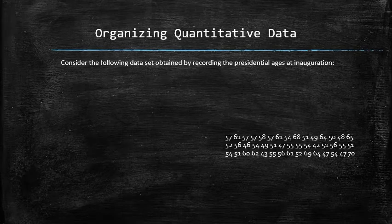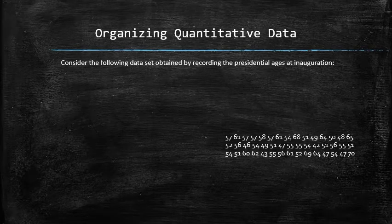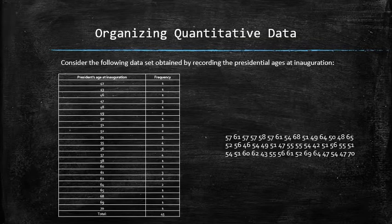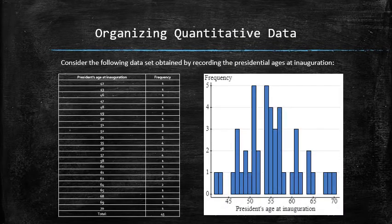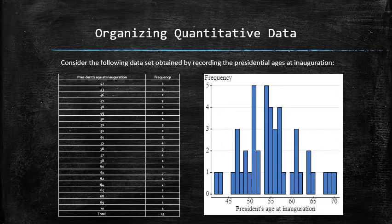If we do that we would end up with the following frequency table and the following histogram. The problem with such summaries is that when more than half of the frequencies are zeros and ones, the summary isn't very informative.